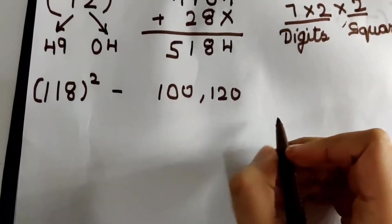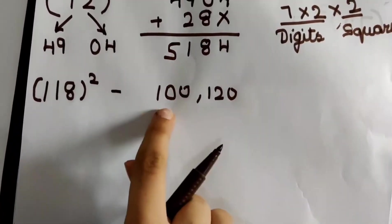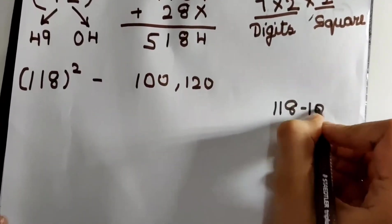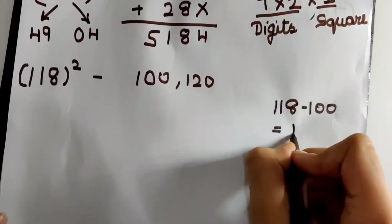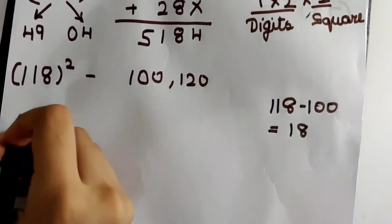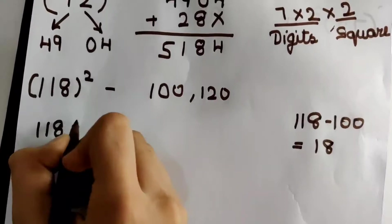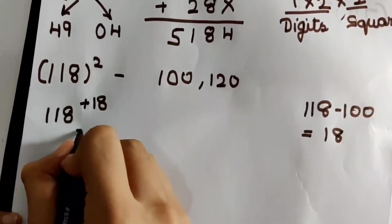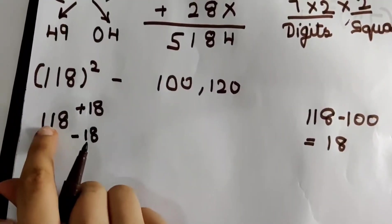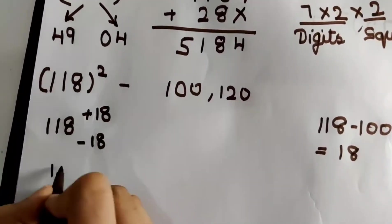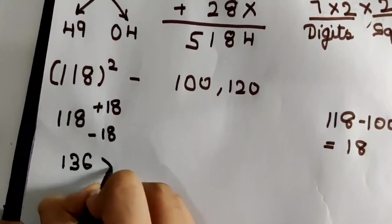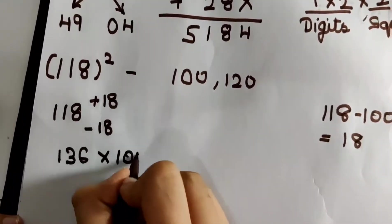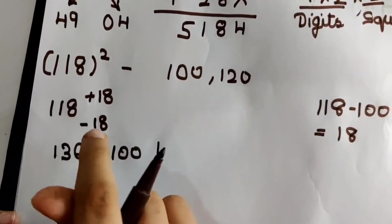I will first subtract 100 from 118. So 118 minus 100 is nothing but 18. I will write 118 here and plus 18 here. The additive inverse of plus 18 is nothing but minus 18. Now I have to multiply 118 plus 18 that is 136 and 118 minus 18 that is 100 together. That is my left hand side.